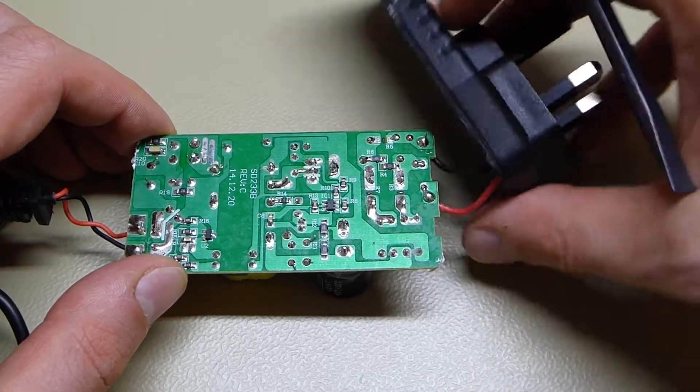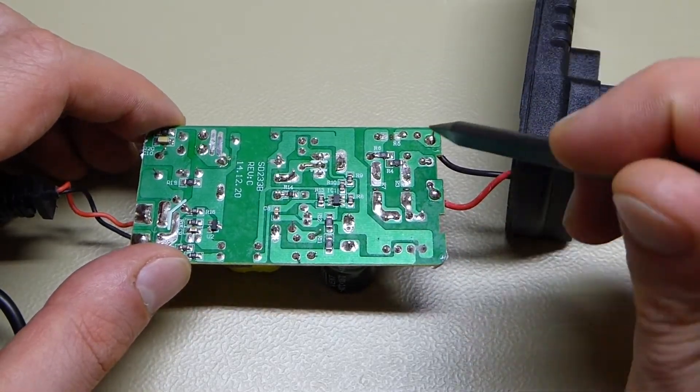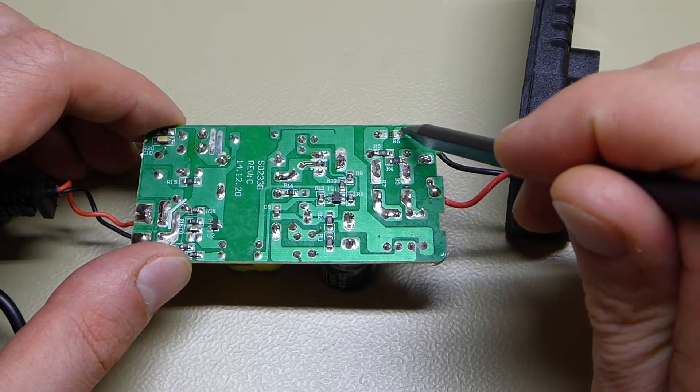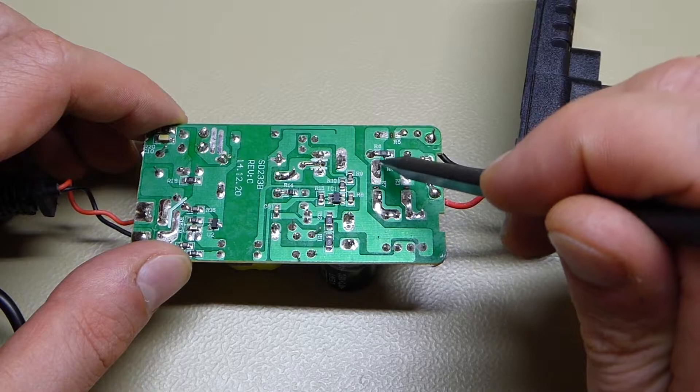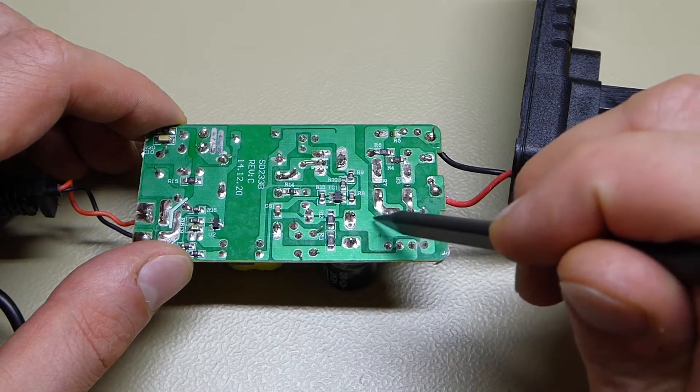You've got one of the incoming mains wires here going across through the inrush current limiting NTC, through a common mode choke to your bridge rectifier into the cap.